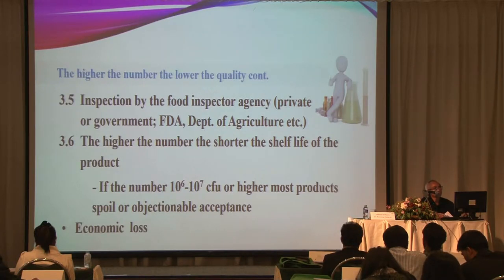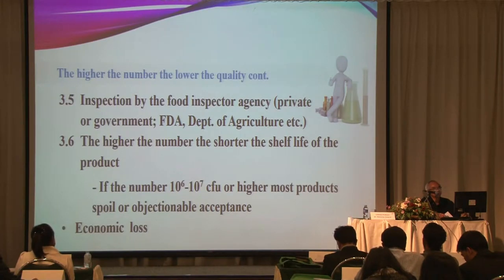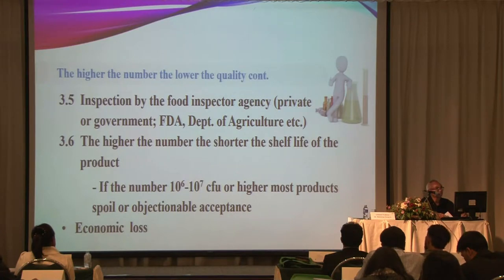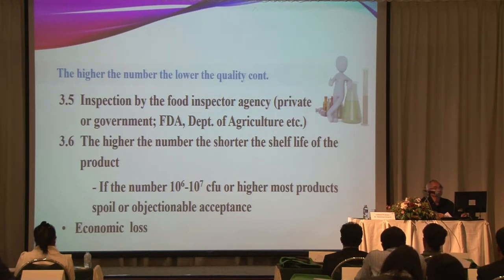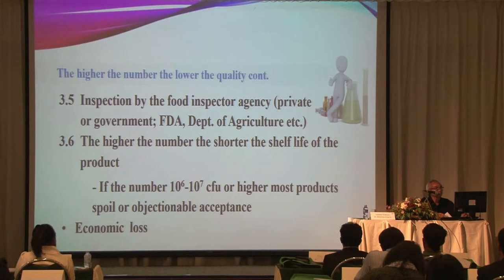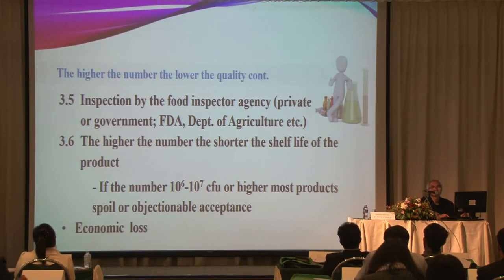Inspection is normally conducted by a food inspector agency, either private or government — the FDA or Department of Agriculture, etc. The higher the number of microorganisms, the shorter the shelf life of the product. If the number of microorganisms is between or over 10⁶ to 10⁷, most of the product will spoil and be objectionable. This results in economic loss, so we need to be careful about the number of microorganisms in your fruit and vegetables — this is very critical.